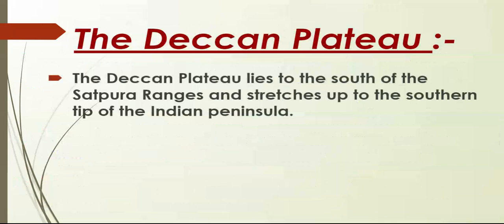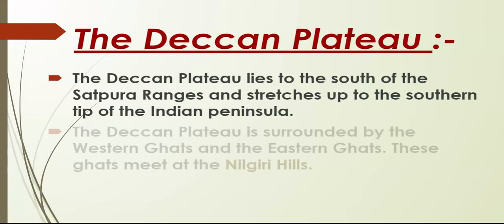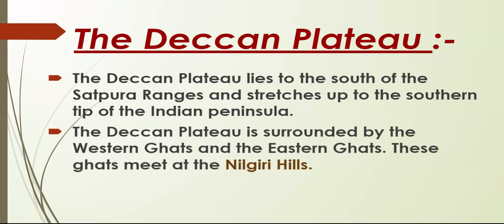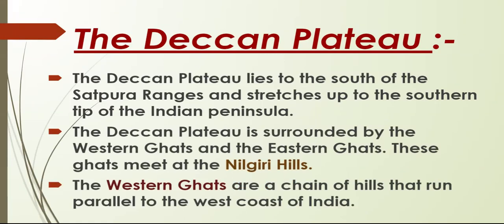The Deccan Plateau lies to the south of the Satpura ranges and stretches up to the southern tip of the Indian Peninsula. Remember, a peninsula is a part of land which is covered by water from three sides. The Deccan Plateau is surrounded by the Western Ghats and the Eastern Ghats, and these ghats meet at the Nilgiri Hills.